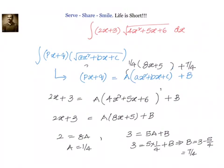So, 2x + 3 can be written as (1/4)(8x + 5) + 7/4. Now we will go ahead and substitute that in the given problem and try to simplify.